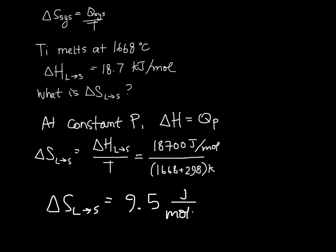So these are the units that we will always have on entropy, joules per mole Kelvin. And this is a typical value for an entropy. It's usually on the order of single joules per mole Kelvin up to maybe 100 joules per mole Kelvin.